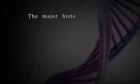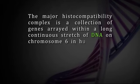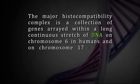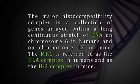The major histocompatibility complex is a collection of genes arrayed within a long continuous stretch of DNA on chromosome 6 in humans and chromosome 17 in mice. The MHC is referred to as the HLA complex in humans and H2 complex in mice. Although the arrangement of genes is somewhat different, in both cases the MHC genes are organized into regions encoding three classes of molecules.